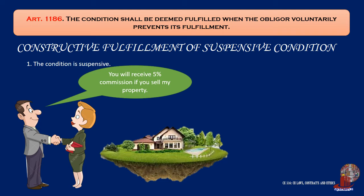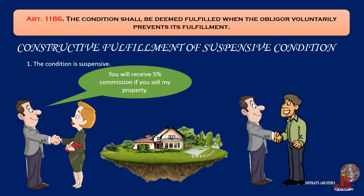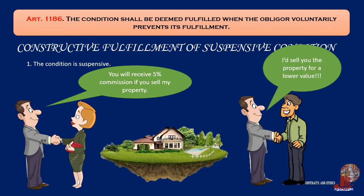The agent found a buyer who definitely decided to buy the property upon the terms prescribed by the owner. To evade the payment of the commission agreed upon, the owner himself sold the property to the buyer at a lower price without the aid of the agent. In this case, it can be said that the due performance by the agent of his undertaking — the condition for the payment of the commission — was purposely prevented by the owner and is deemed fulfilled.